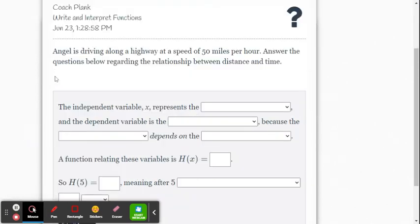Let's look at one more example. Angel is driving along a highway at a speed of 50 miles per hour. Answer the question regarding the relationship between distance and time. So our independent quantity is going to be time in hours. Our dependent quantity is going to be the distance traveled in miles.